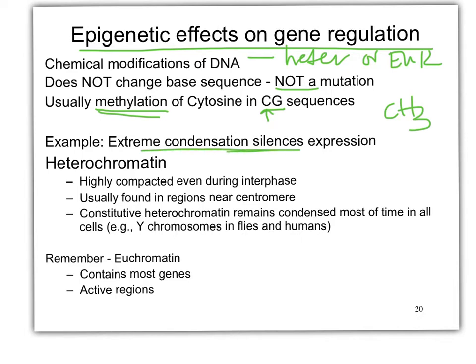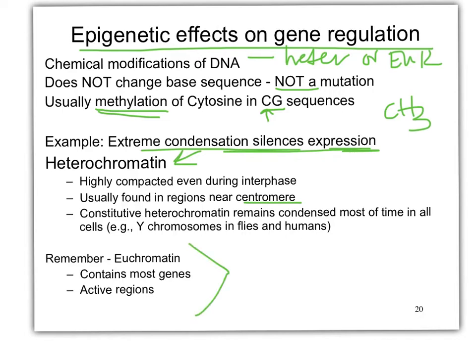Extreme condensation silences expression — into heterochromatin. The centromere and near the telomeres is where heterochromatin is. Euchromatin contains the active genes, the active regions. Methylation is adding a methyl group onto the C of a CG. It's targeted for methylation — that C will be methylated by DNA methyltransferase enzymes. Then the other strand will be methylated. They call that hemi-methylated because it's half, and the fully methylated form has both strands methylated.